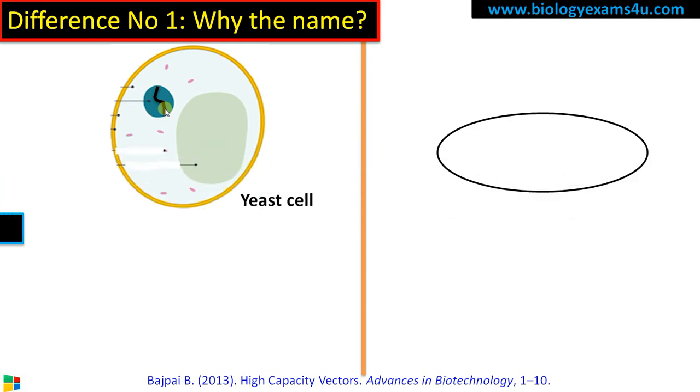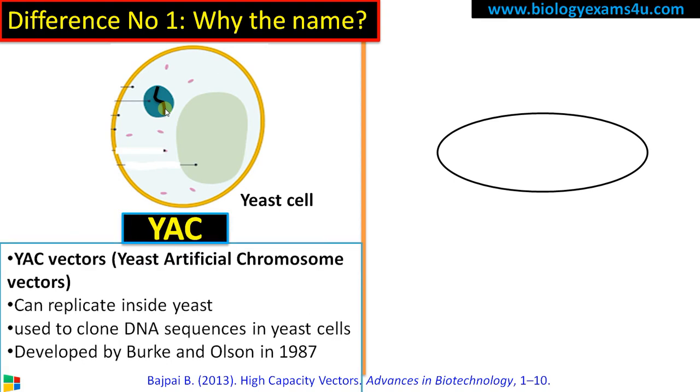Difference number one, why the name? YAC vector is so called, it is called as yeast artificial chromosome. So this is the yeast cell, this is the YAC vector. It behaves just like an artificial chromosome inside yeast cell. It can replicate inside yeast. It is used to clone DNA sequences in yeast cells. It was developed by Burke and Oslan in 1987.